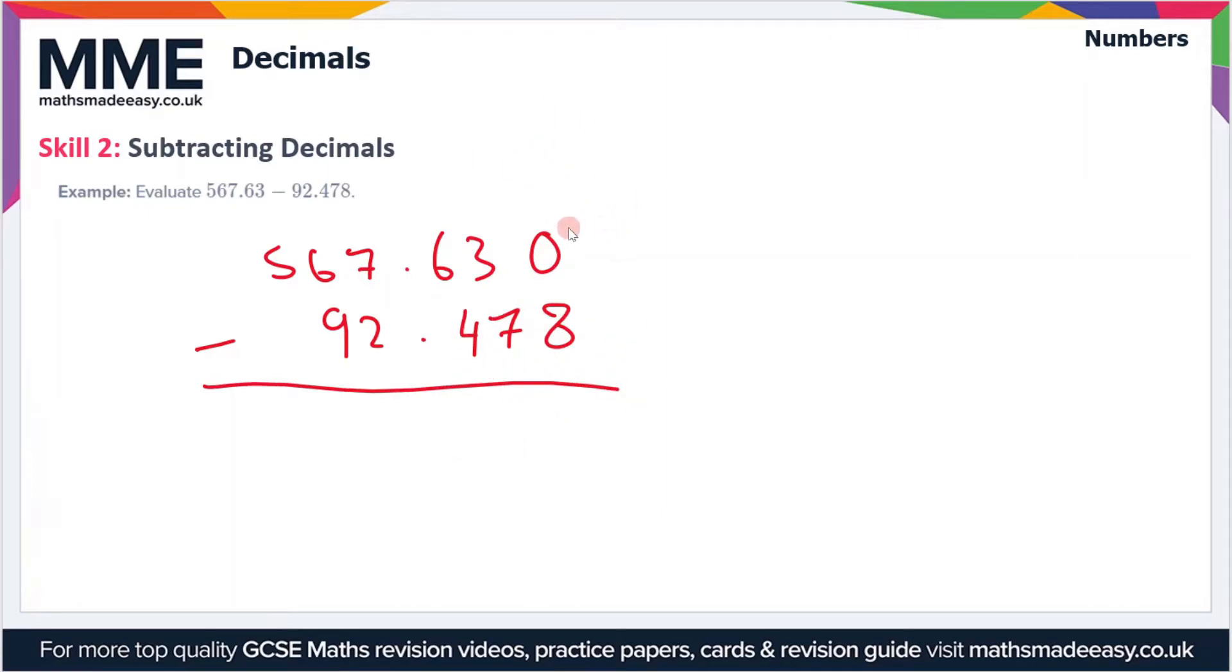First of all, let's look at 0 minus 8. Well we can't do that, so we'll take a digit off this column, make that into a 2, and add a 1 here to turn this 0 into a 10. So now we can do 10 minus 8 which is 2.